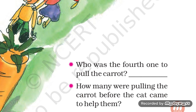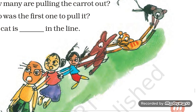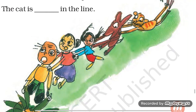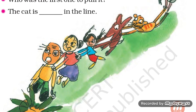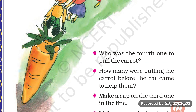Next question: How many were pulling the carrot before the cat came to help them? Cat ke aane se pehle kitne log carrot kkhich rahe the? Let's count: one, two, three, four. Four were pulling the carrot before the cat came to help them.